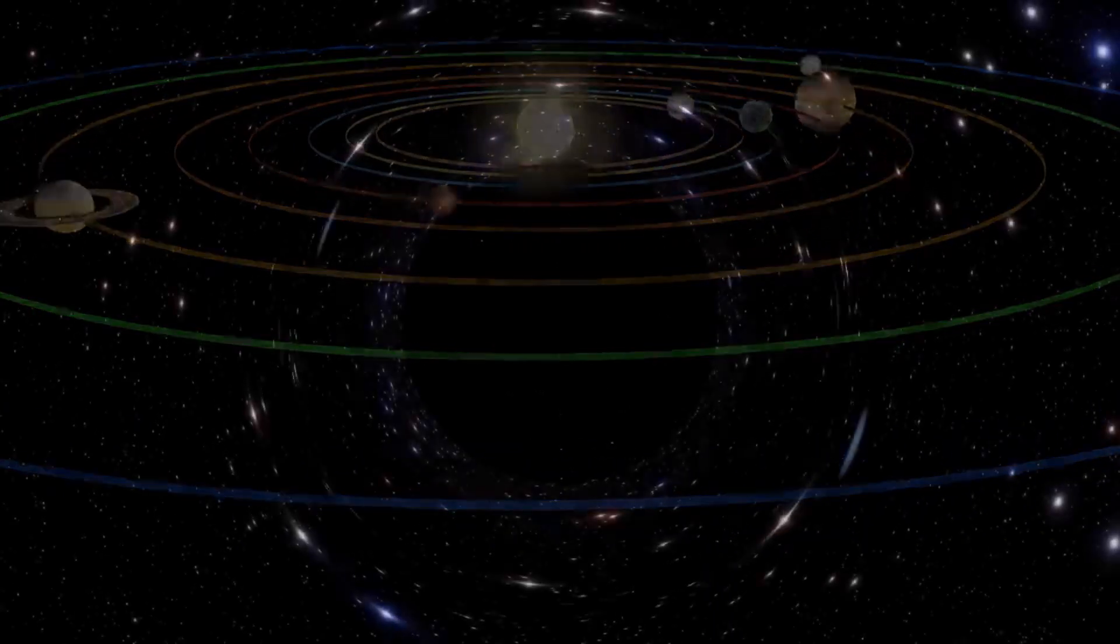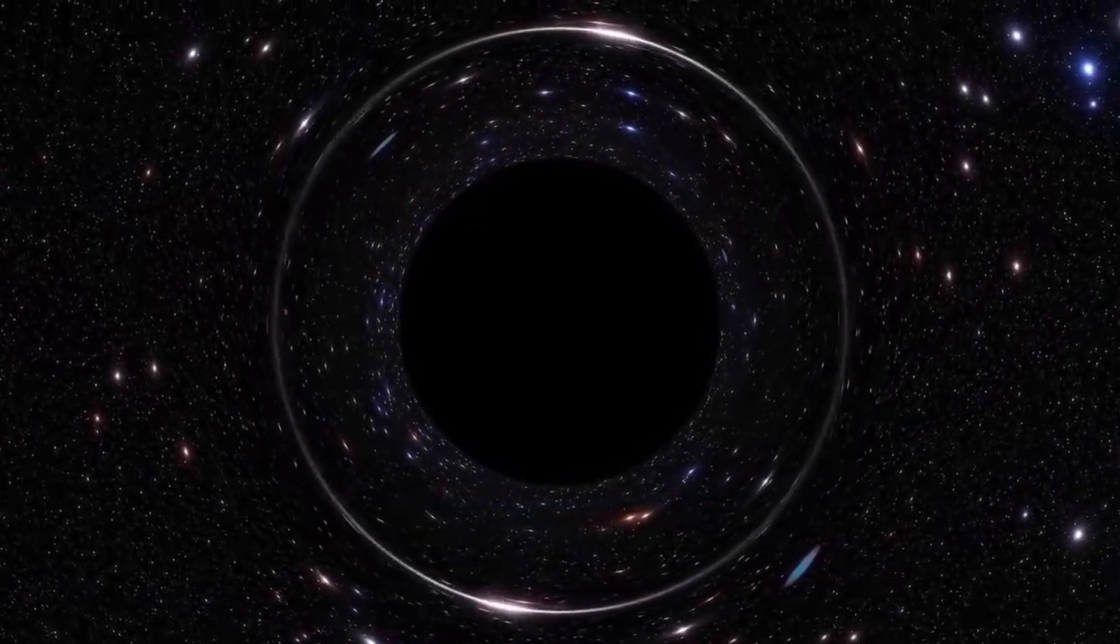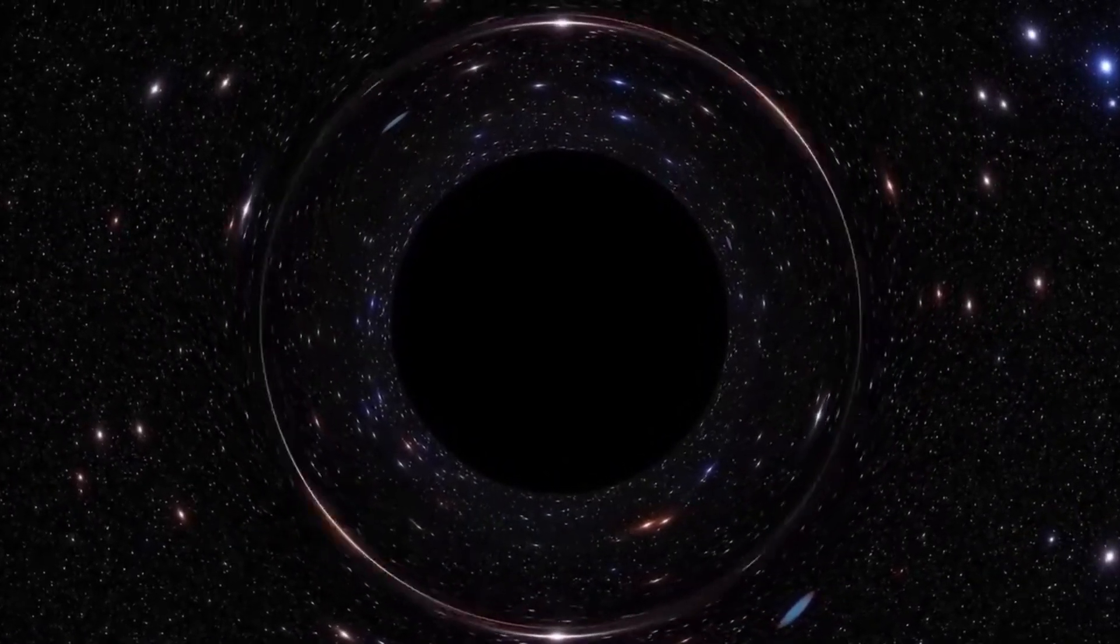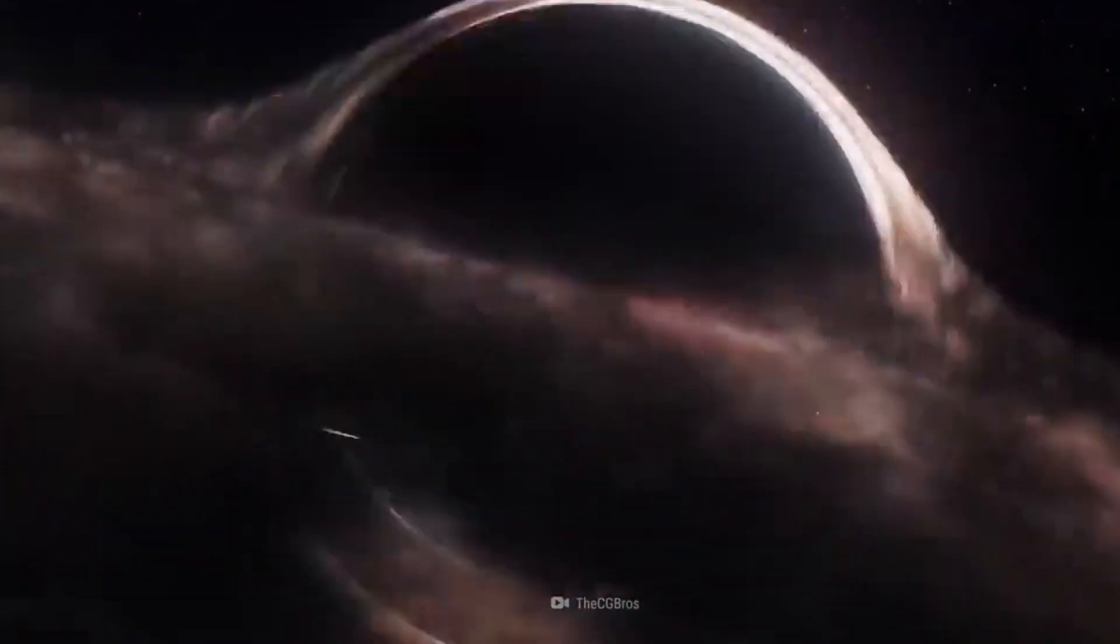The Schwarzschild radius, for those who are not familiar, is a function that describes the radius of an object at which its mass collapses into a black hole. For a non-rotating black hole, the Schwarzschild radius is equivalent to the event horizon radius.